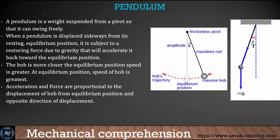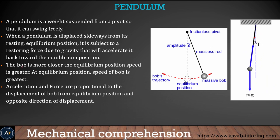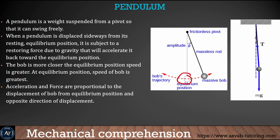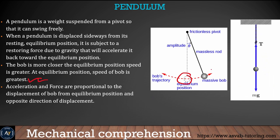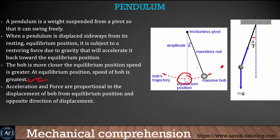The last thing we learn in this video is the pendulum. The most important thing to know is where the maximum and minimum speed of the bob occurs. The maximum speed of the bob is at the equilibrium position — speed is greatest there. The speed of the bob is zero at the maximum point of its swing. Make sure you write this information in your notebook and watch the video multiple times. Download the application and practice — it covers everything you need for your test. Thank you.